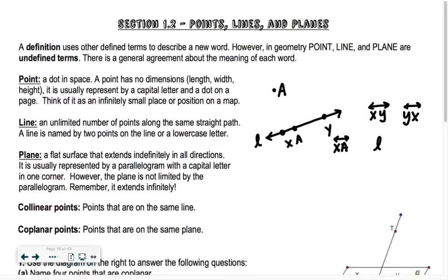So a plane — a plane is a flat surface that extends indefinitely in all directions. We usually draw it so it looks like a parallelogram, and then we usually have some kind of capital letter in the corner, like an M — that would be plane M. However, the plane is not limited by the parallelogram. It extends in all directions. So a plane is like if I took this piece of paper and went all the way out to the right, all the way to the left — in all directions. It goes on forever, like a line goes on forever.